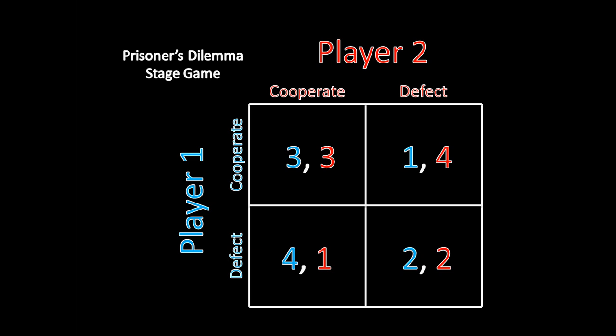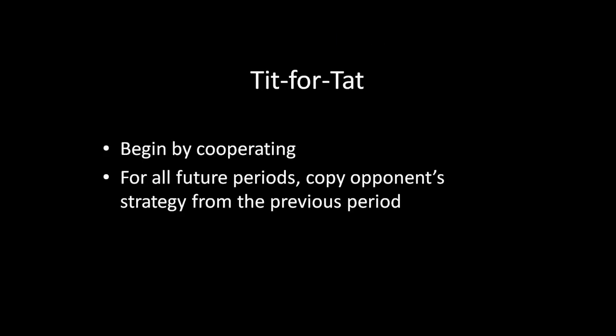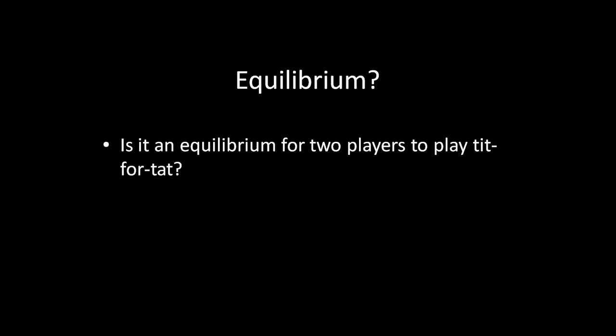Tit for tat says the following. You begin the game by cooperating. Then, in all future periods, you duplicate your opponent's strategy from the previous period. So if your opponent cooperated in the previous period, you cooperate in this period. And likewise, if your opponent defected in the previous period, you defect in this period. It's that simple. There's nothing else to it. You don't worry about what they did in any previous period other than just the period before this one.